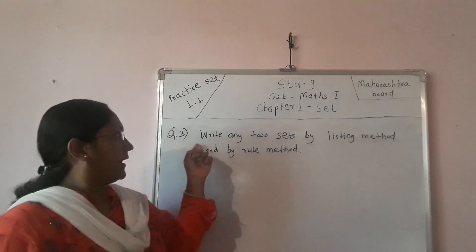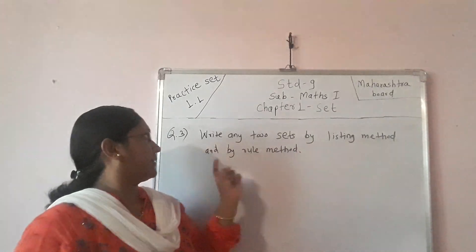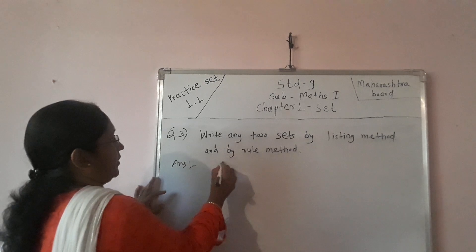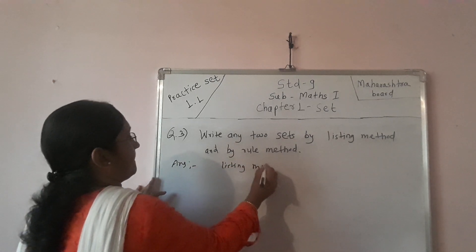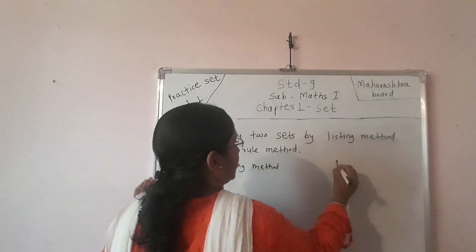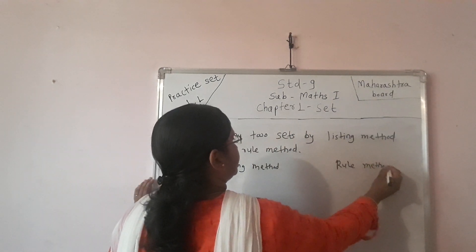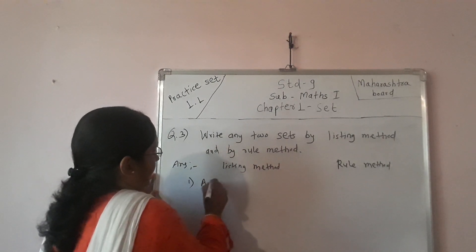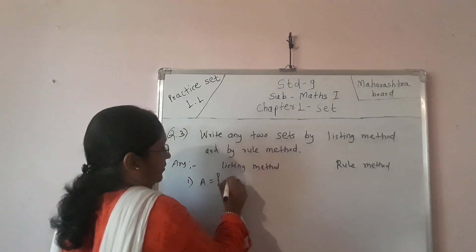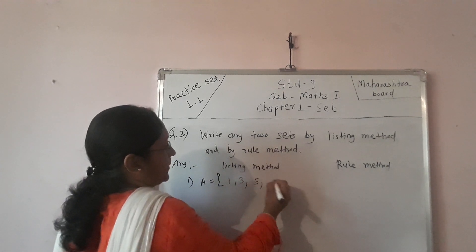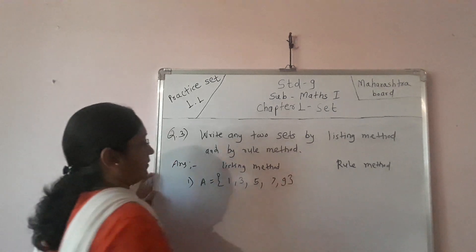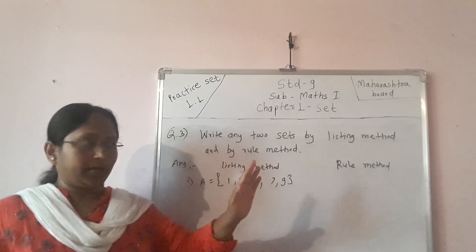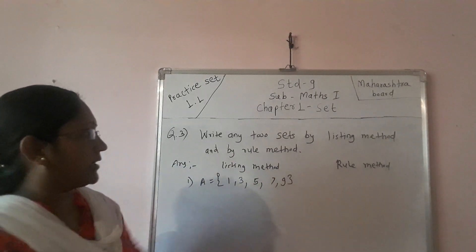Question number three: write any two sets by listing method and by rule method. For example, I take: A = {1, 3, 5, 7, 9}. This is the set of all odd numbers between 1 and 10. This is the listing method. In rule method, we write: A = {x | x is an odd number and 1 ≤ x ≤ 10}.